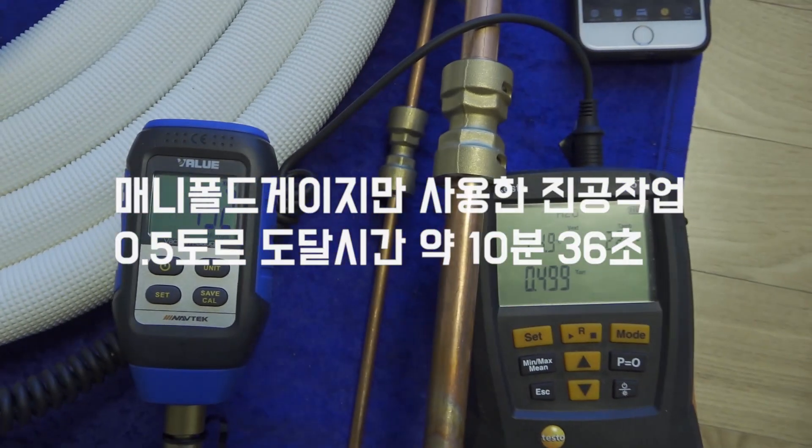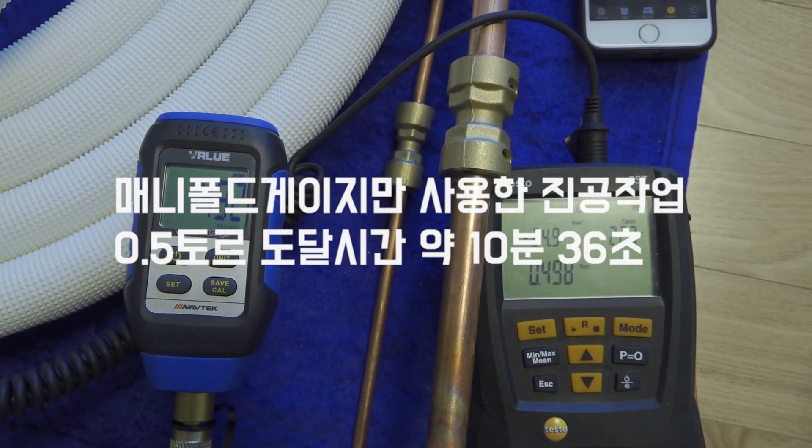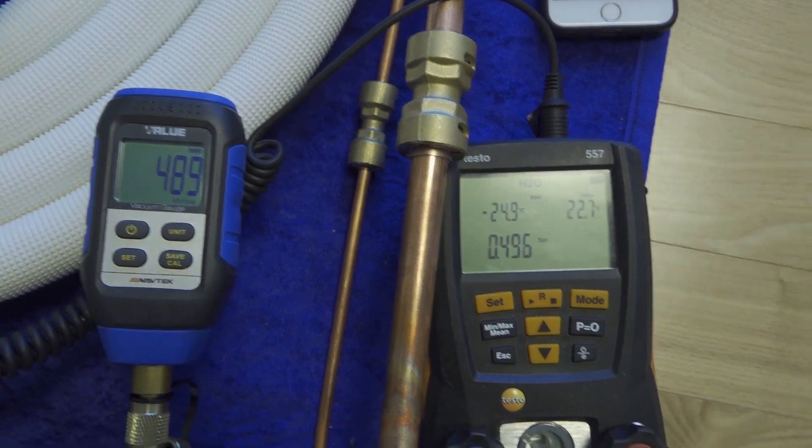Now it's 0.5 Torr. Actually, the Value gauge is starting to show slightly lower vacuum now.